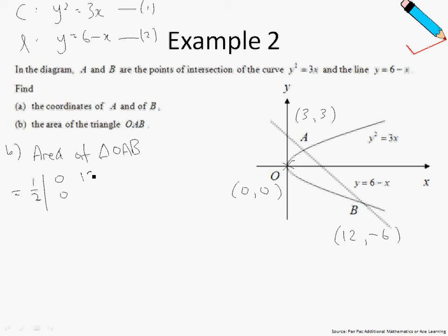So for B, it will be this coordinates, and A is this. And finally, don't forget that the point that you started with, you have to end off with the same point. So how are we going to solve this?